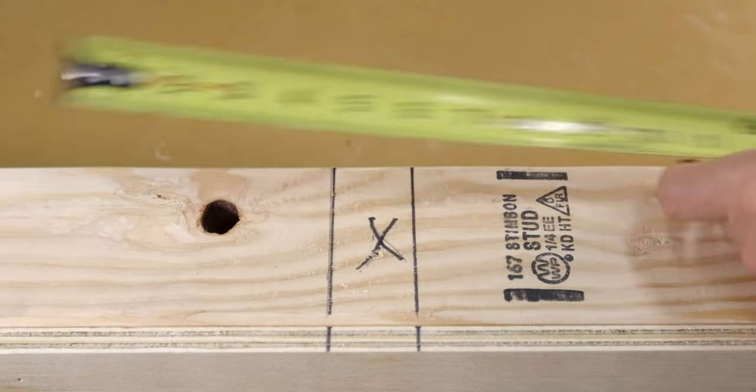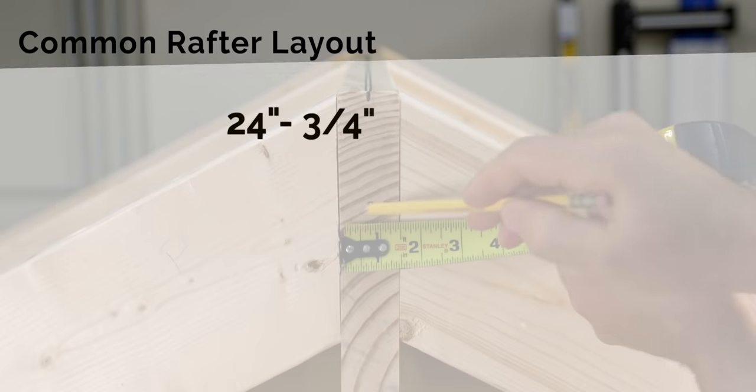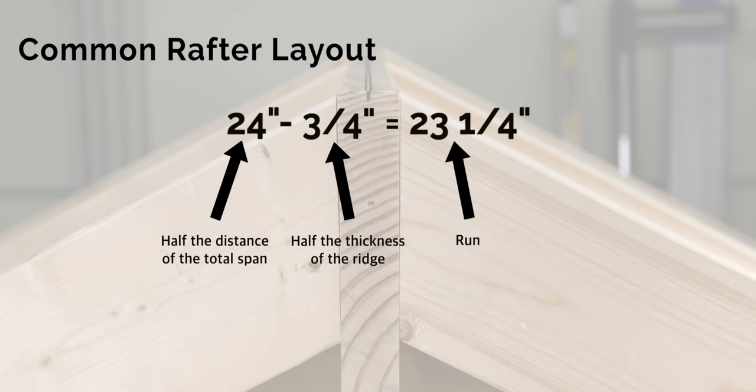The ridge is an inch and a half wide so half of that would be three quarters of an inch. Therefore 24 minus three quarters leaves us with a run of 23 and a quarter.